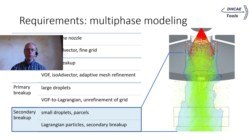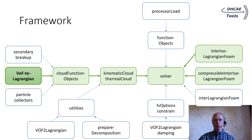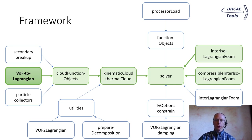The transformed particles face further breakups. With the parcel approach, a large number of small particles can be modeled efficiently. For the secondary breakups, models like Reitz-Divakar and Pilch-Erdmann were re-implemented as cloud function objects. The VoF-to-Lagrangian functionality was implemented as a cloud function object, and in the very same way the secondary breakup models and the particle collectors for monitoring and post-processing were implemented. With this approach, every cloud based on the Kinematic Cloud can immediately make use of it — it is quite easy to use with a thermal cloud or a reacting cloud, for example if cooling and solidification of the metal droplets should be considered as well.